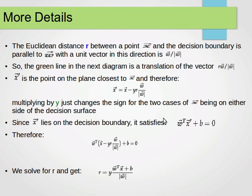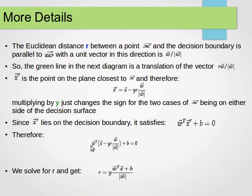Since x' lies on the decision boundary, it should satisfy the equation for that boundary: w^T x + b = 0. Therefore, using the two equations, we just plug x' into that formula.